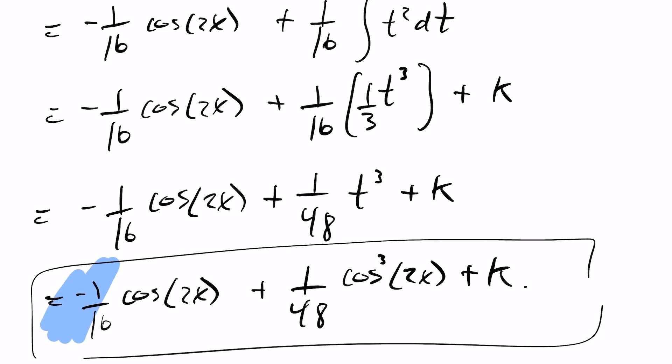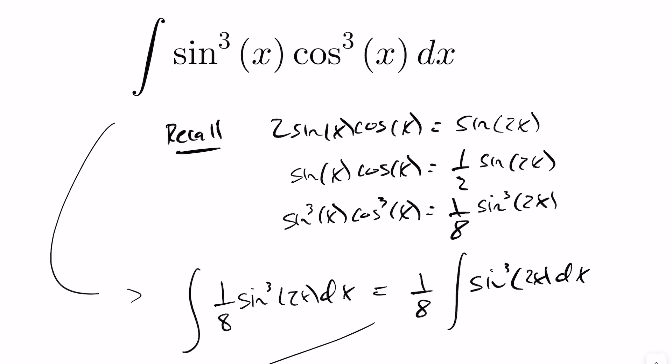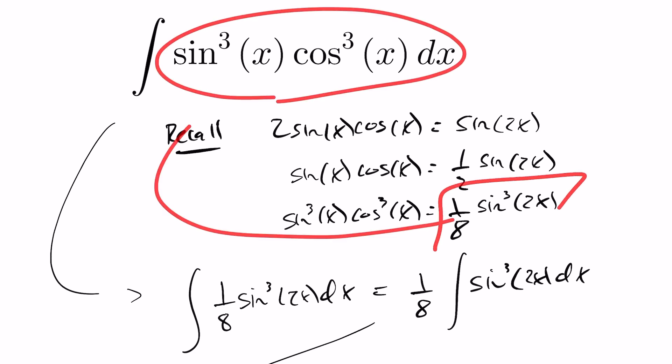And this becomes our answer for the following problem here. Negative 1 over 16 cos of 2x plus 1 over 48 cos cubed of 2x plus some constant value of k. And again this was achieved just by going ahead and doing breaking this down using our identities to get it down to a single expression.